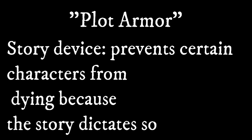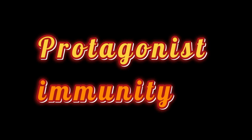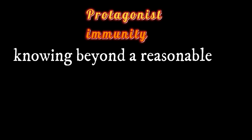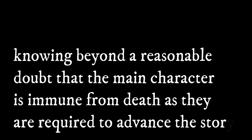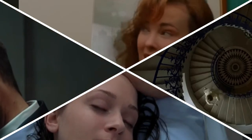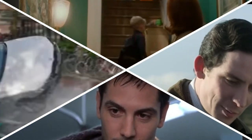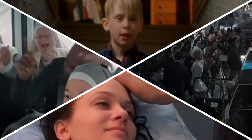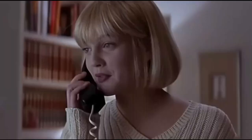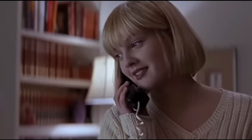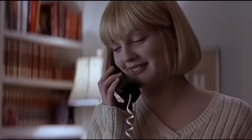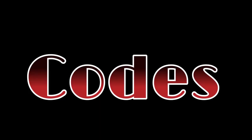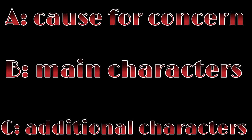To give a summary — this video was my own extension on plot armour, a simple storytelling rule that keeps characters alive because the story dictates so. My extension is named Protagonist Immunity, defined as: knowing beyond a reasonable doubt that the main character is immune from death as they are required to advance the story. My theory revolves around the central character within the genres of media. The main character is the harness, but this theory also talks in relation to the people around the protagonist. The basic codes I laid out were that Protagonist Immunity must involve two or more of the following: A — Cause for Concern, B — Main Characters, and C — Additional Characters.